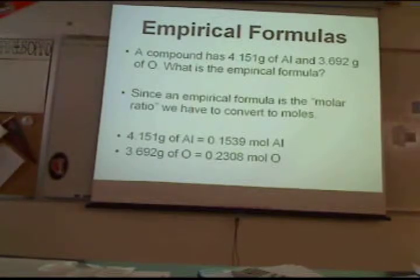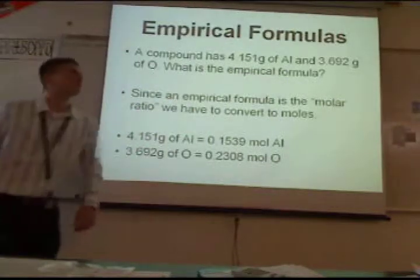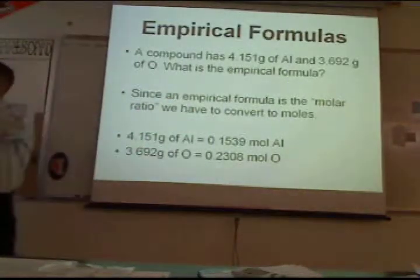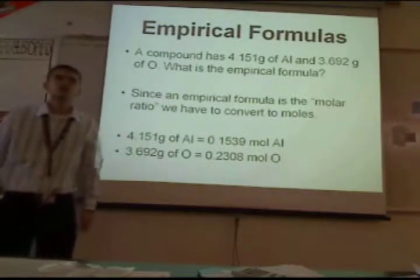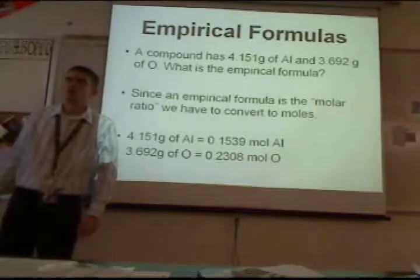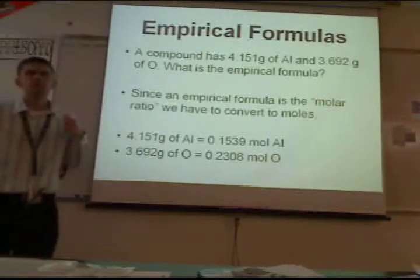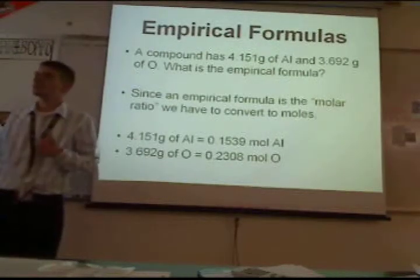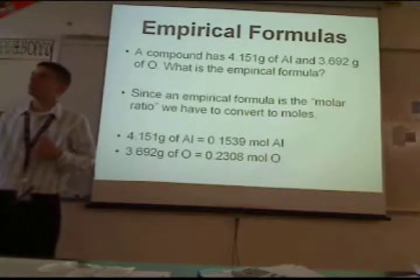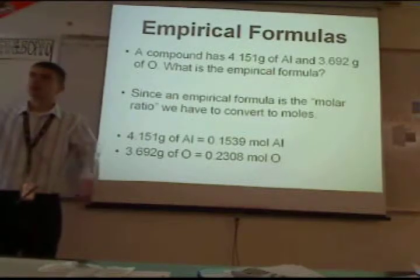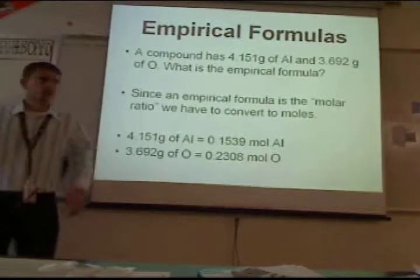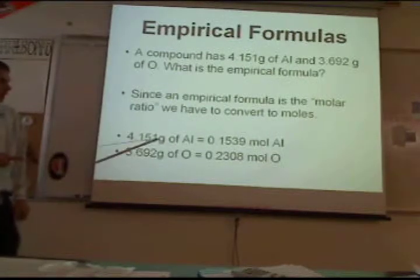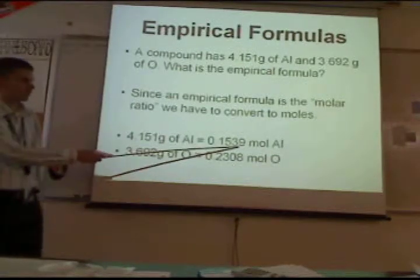So we did this one on Friday. A compound has 4.15 grams of aluminum and 3.692 grams of oxygen. What is the empirical formula? Well, empirical formula means molar ratio, so first you've got to find the moles — go from grams to moles for both of them.